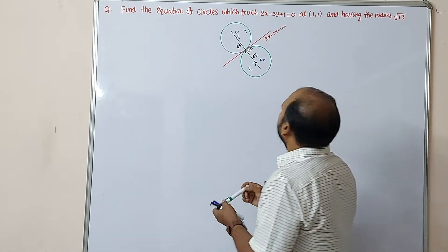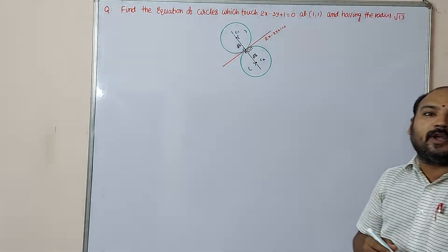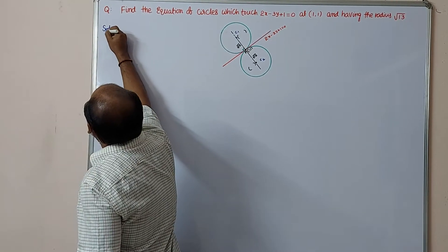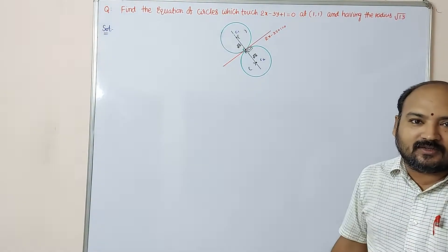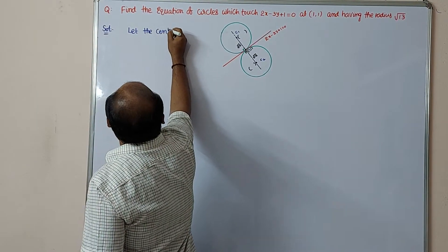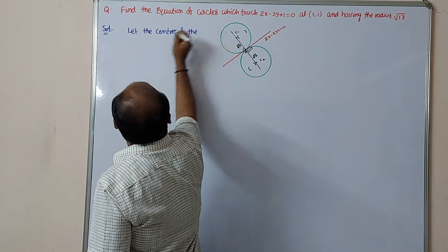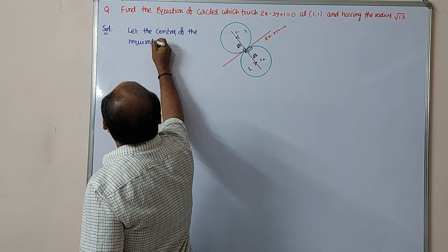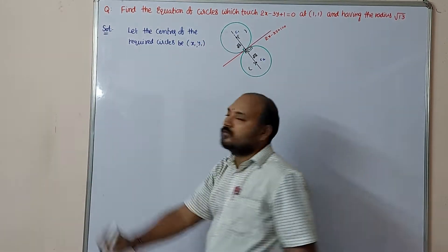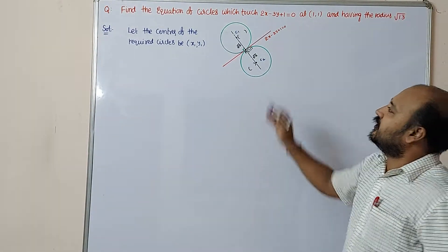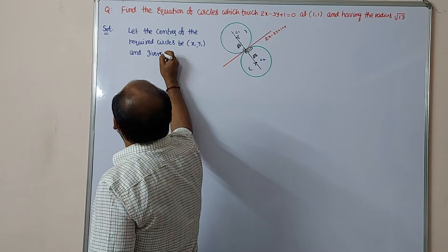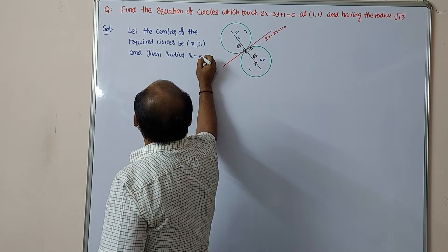The line of centers C1C2 is absolutely perpendicular to the given line. Now, step one: find the equation of circles. Let the centers of the required circles be (x1, y1) — either this one or this one. The given radius r is equal to root 13.